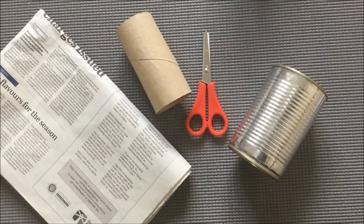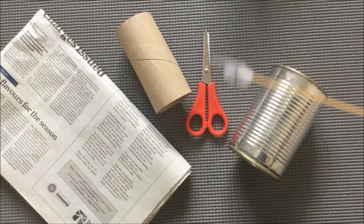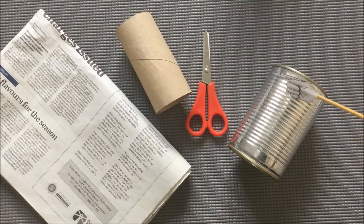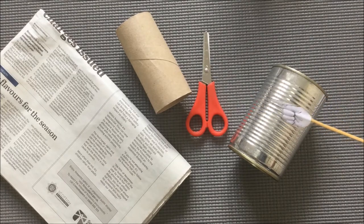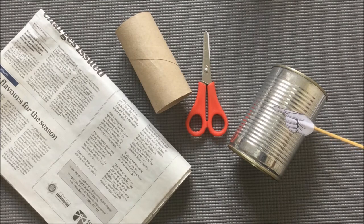So here's what you'll need to make your own paper pot. Some newspapers, cardboard tubes, some scissors and a mould to wrap your newspaper around. I'm using a tin can but you could use a rolling pin or a bottle or a jam jar depending on the size of the pot that you require.